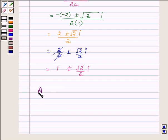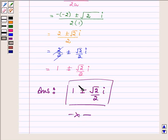Thus, on solving the given equation, our answer is 1 plus minus square root of 2 upon 2 iota. So this completes the solution. Hope you enjoyed it, take care and have a good day.